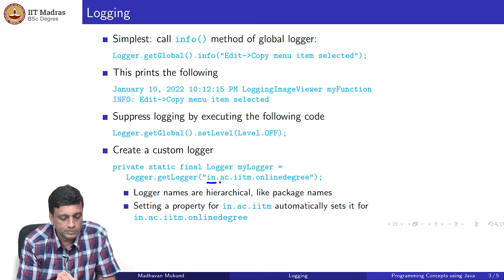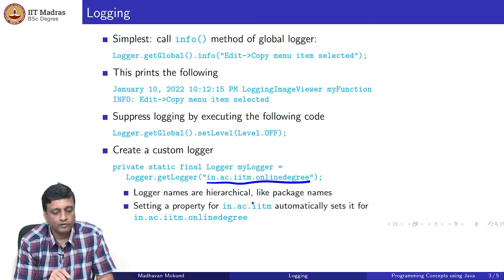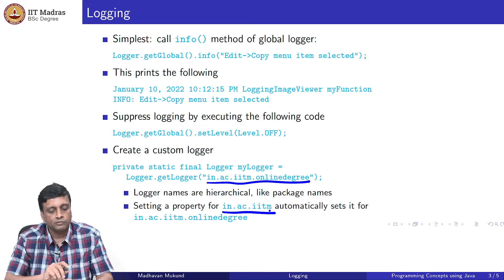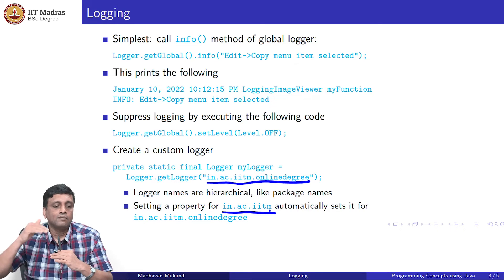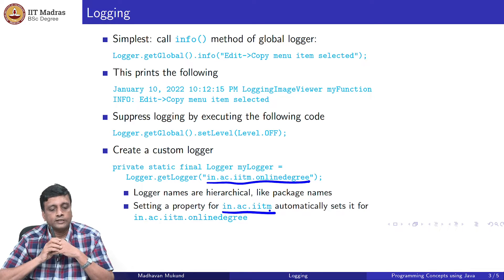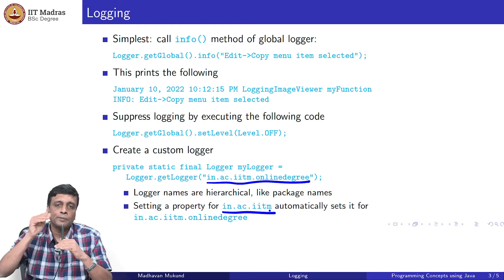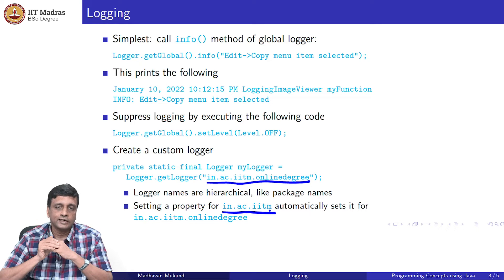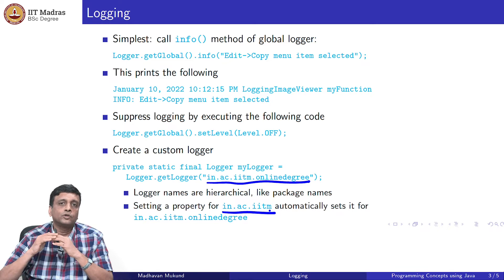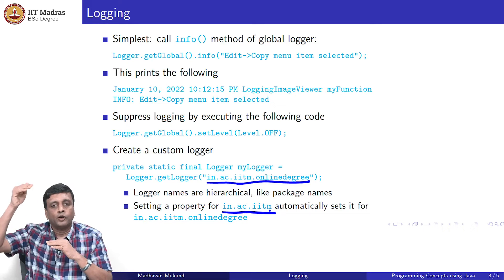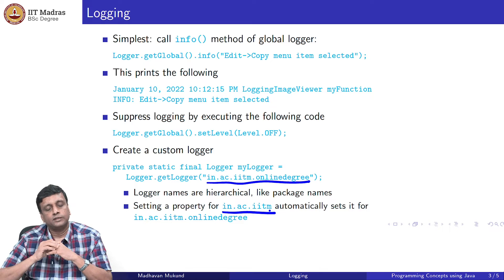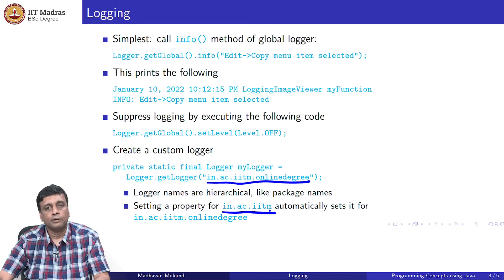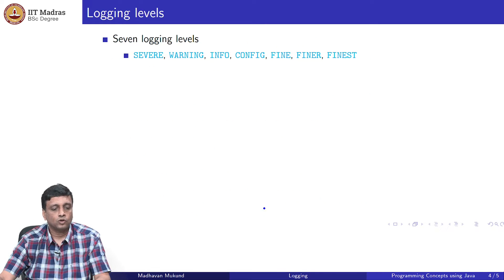Log names are actually hierarchical. If I had a logger called in.ac.iitm, it would be at a higher level than the logger for in.ac.iitm.onlinedegree. If I set some properties for in.ac.iitm — for example, controlling which types of messages get logged — it will automatically apply to the lower level as well. This hierarchy is implicit in the naming of these individual logs.